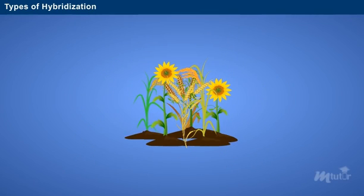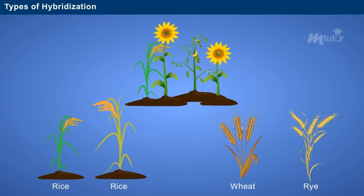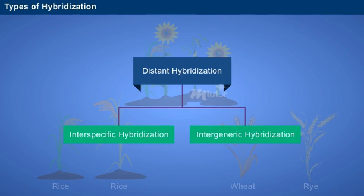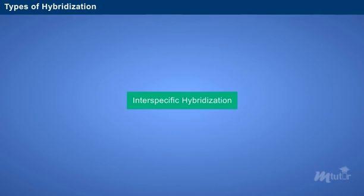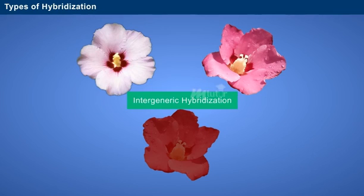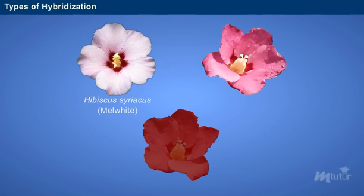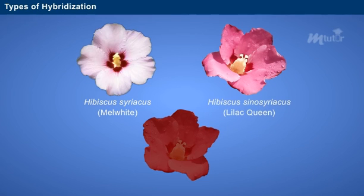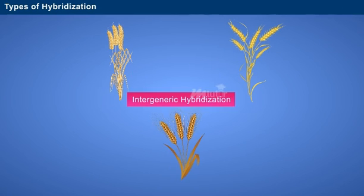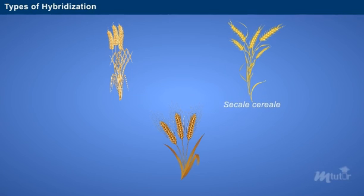Distant hybridization involves crossing of different species among the same or different genera, and can be classified into interspecific and intergeneric hybridization. Interspecific hybridization involves plants from different species of the same genus, also called intrageneric hybridization. An example is crossing Hibiscus syriacus 'Melwhite' and Hibiscus syriacus 'Lilac Queen'. Intergeneric hybridization involves plants from different genera. An example is crossing wheat and rye to produce Triticale.